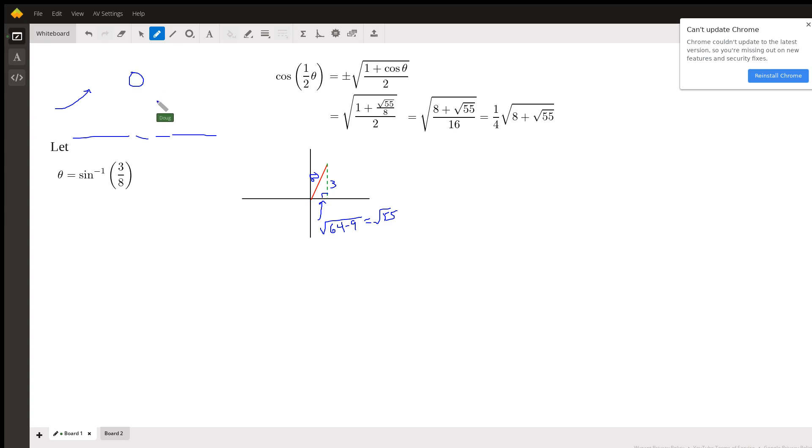In which the angle is going to end up in. So if we let theta equal this angle right here, the angle that has a sine of three-eighths, then we can rewrite this expression like this: cosine of one-half theta, where theta is the angle that has a sine of three-eighths.